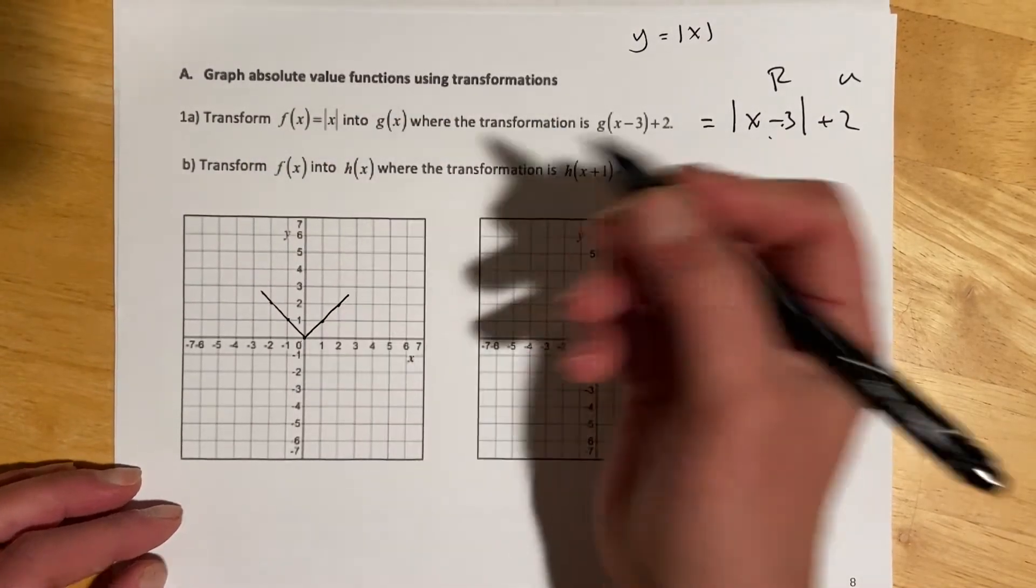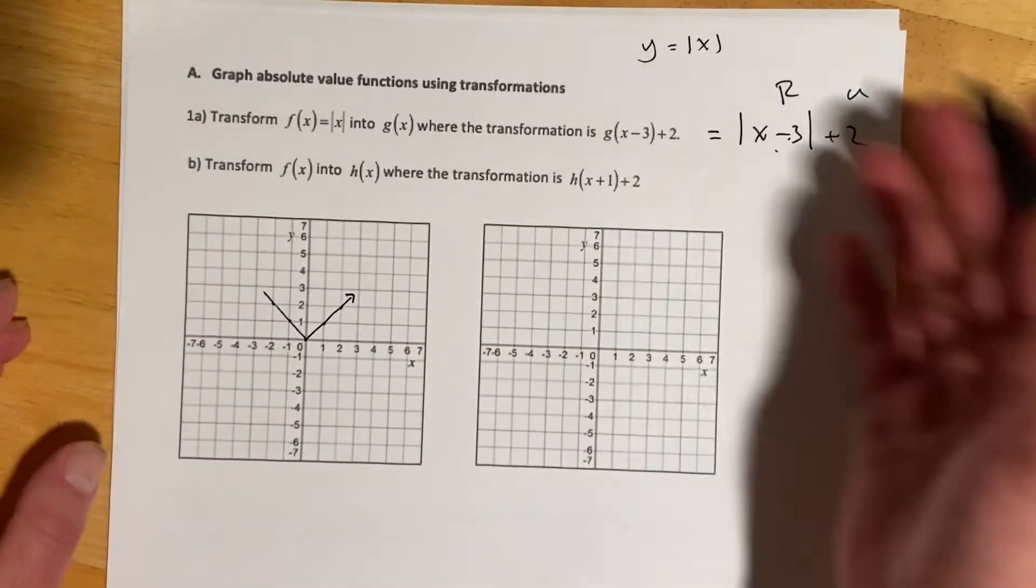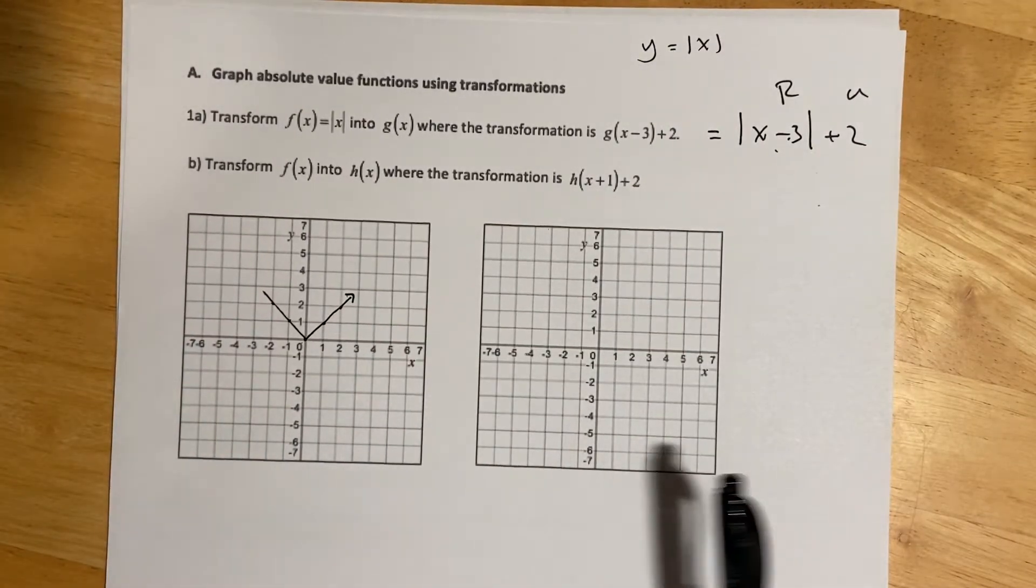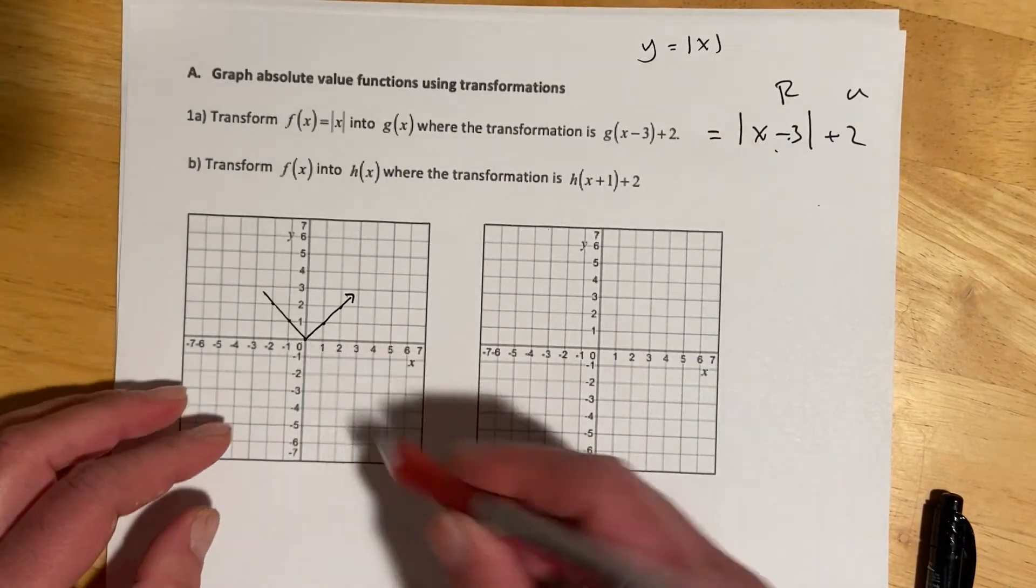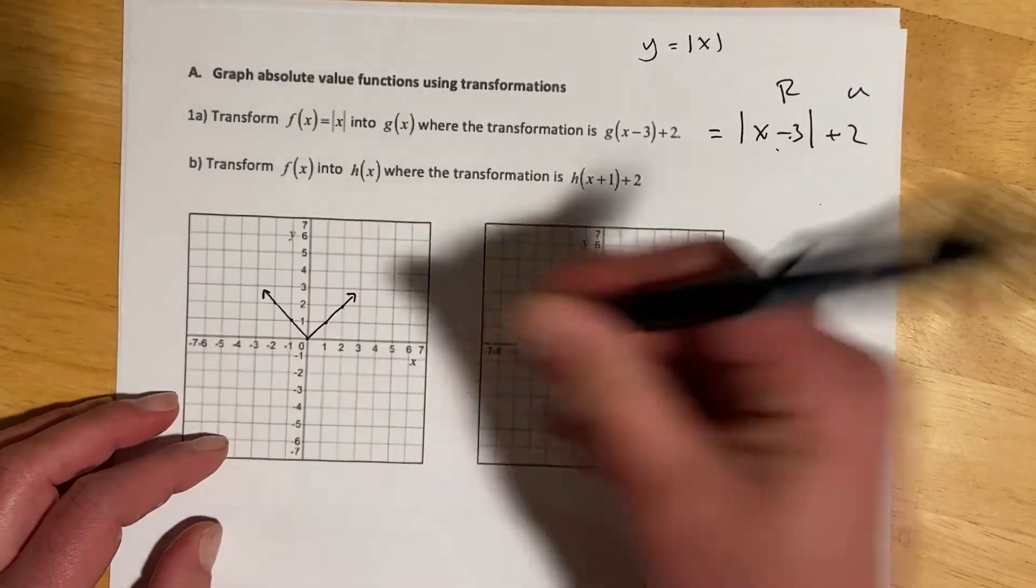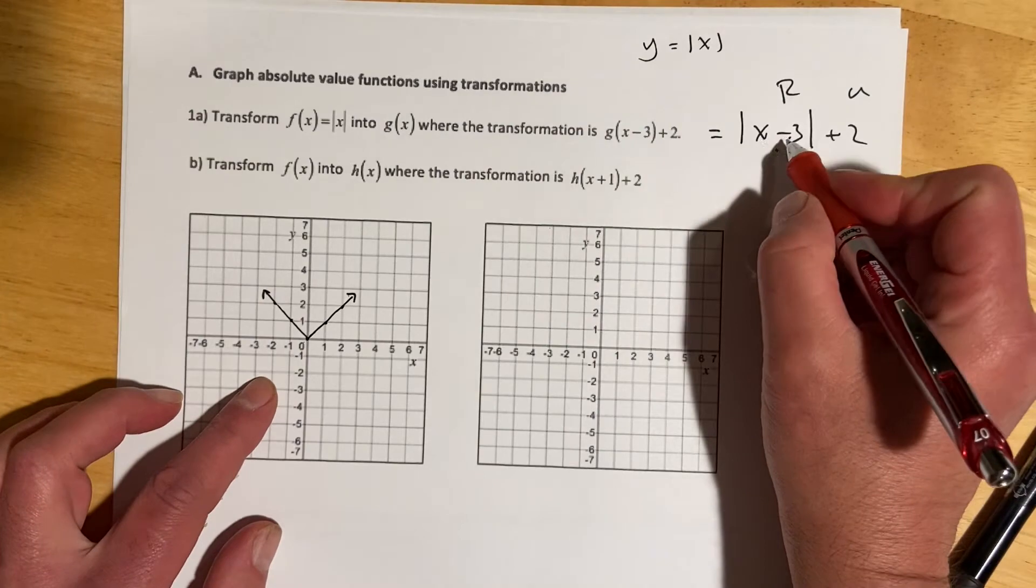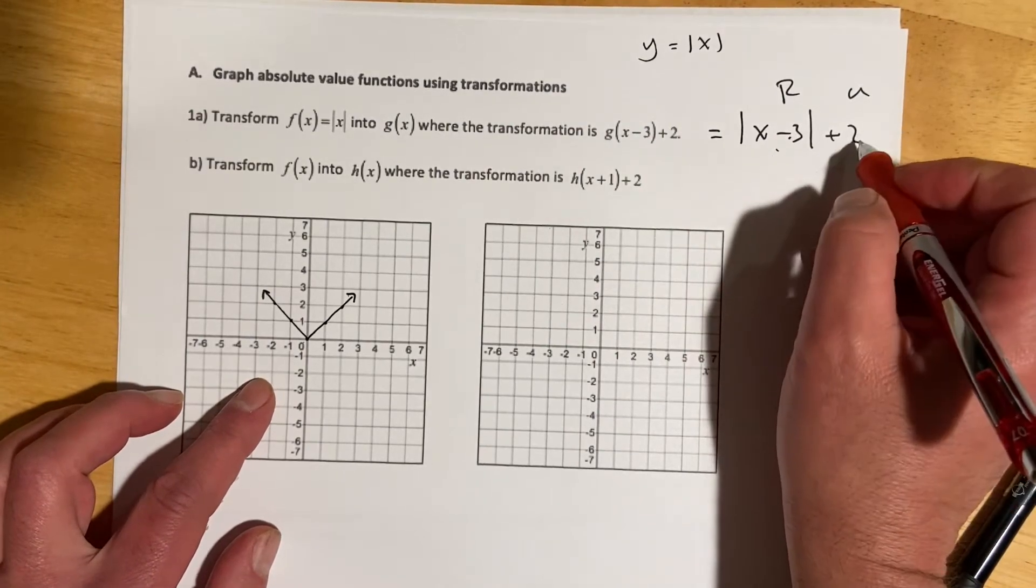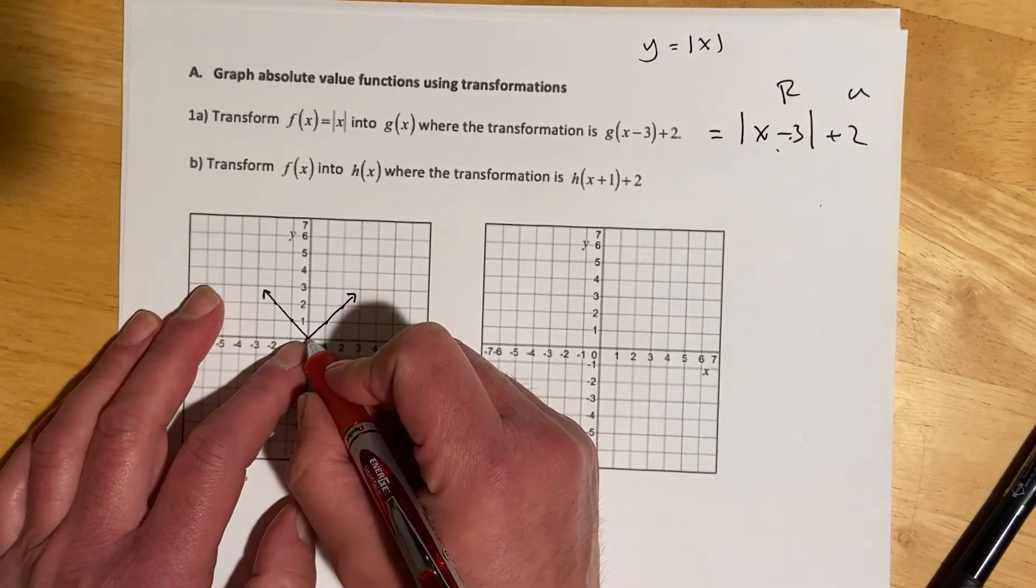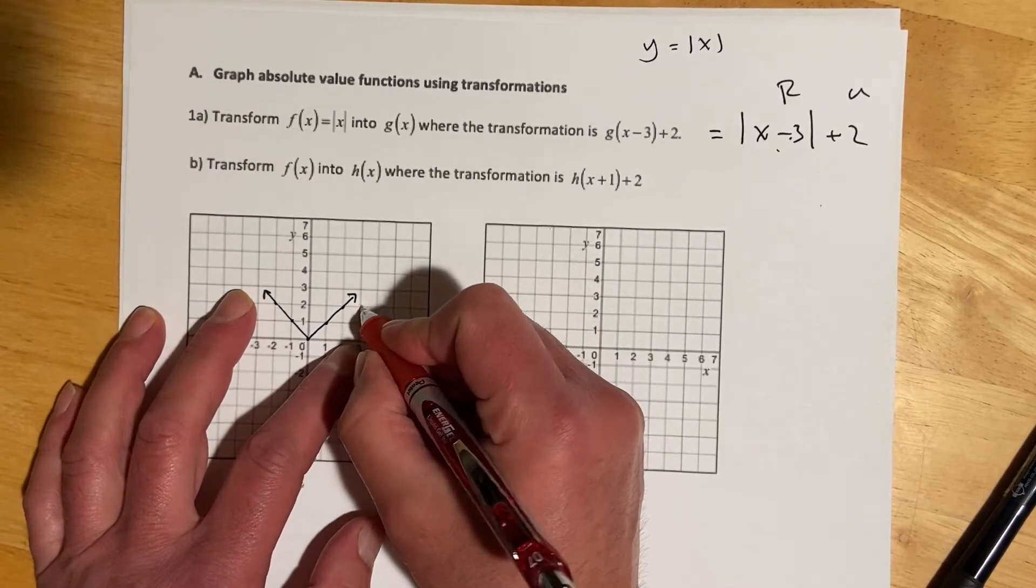When you're doing the homework, you won't draw the parent function. I'm just doing this as a reference. We want to move everything right 3 and up 2. If I start with my vertex and go right 3 and up 2, now I'm here.